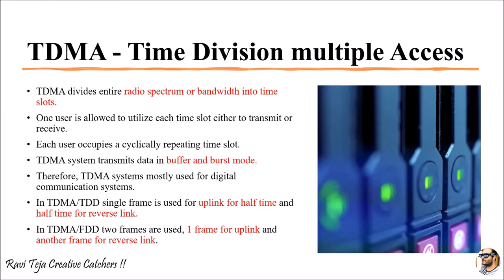When user two and user three finish their time slots, user one must wait before it can transmit or receive again. During this waiting period, the TDMA system transmits data in buffer and burst mode. When user one is ready to transmit but there is no available time slot yet, it stores its data in the buffer. Whenever the time slot appears in the cycling format, user one can then transmit or receive — this is the buffer and burst mode concept. Therefore, TDMA systems are mostly utilized in digital communication systems.